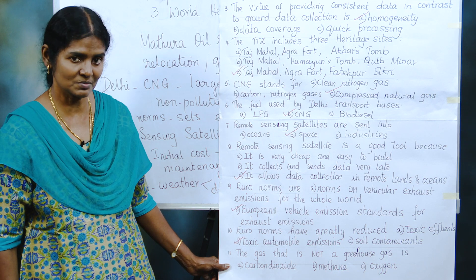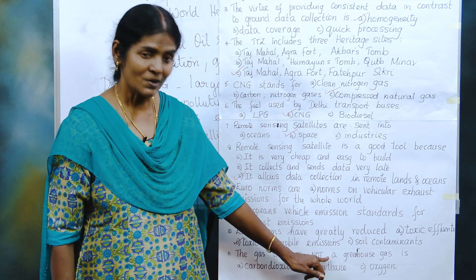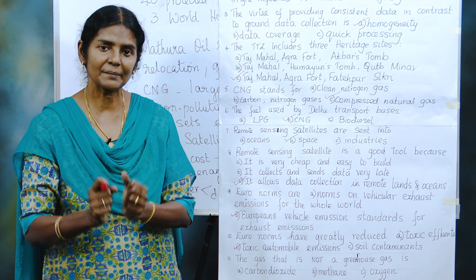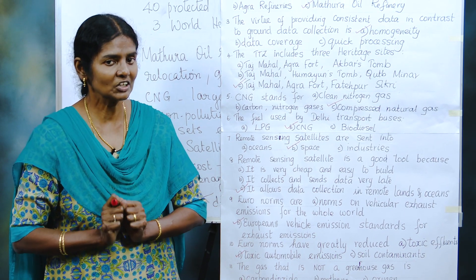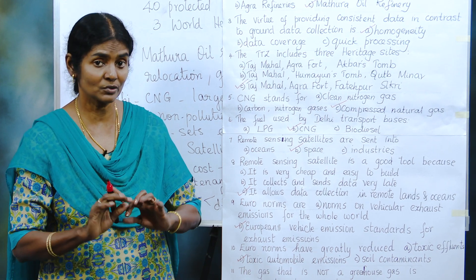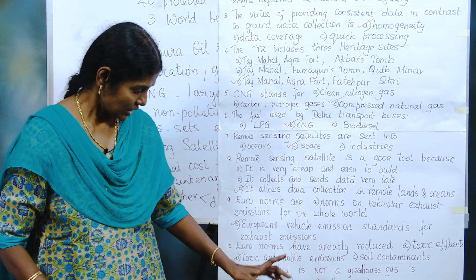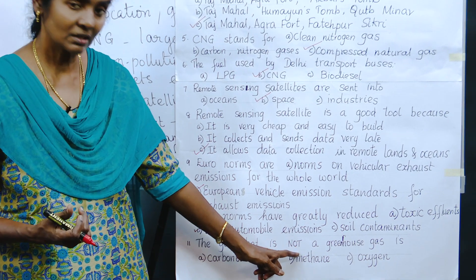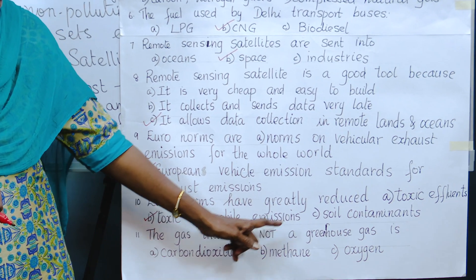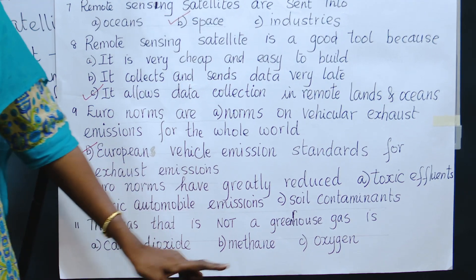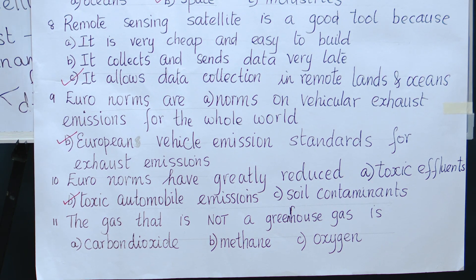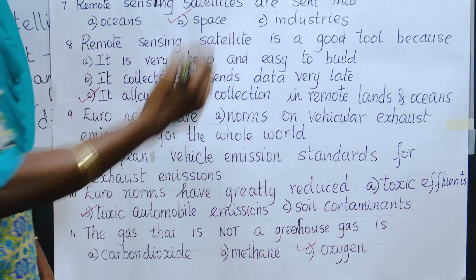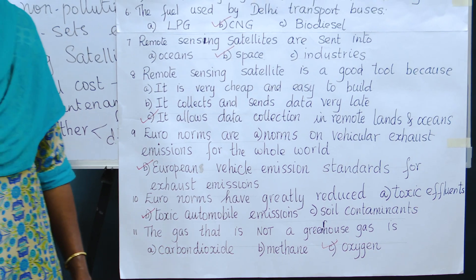The gas that is not a greenhouse gas: a greenhouse gas traps heat and does not allow it to escape back. Carbon dioxide is a very good greenhouse gas. Methane is also a greenhouse gas. But oxygen is not a greenhouse gas — it does not have the capacity to trap heat. So the answer is oxygen is not a greenhouse gas.